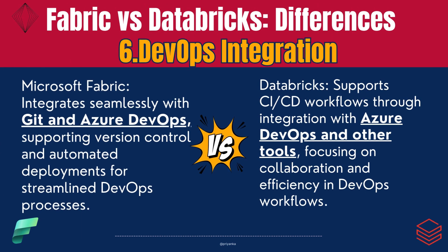Six: DevOps Integration. Microsoft Fabric integrates seamlessly with Git and Azure DevOps, supporting version control and automated deployments for streamlined DevOps processes. Databricks supports CI/CD workflows through integration with Azure DevOps and other tools, focusing on collaboration and efficiency in DevOps workflows.